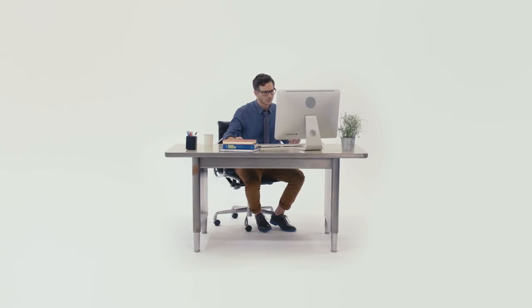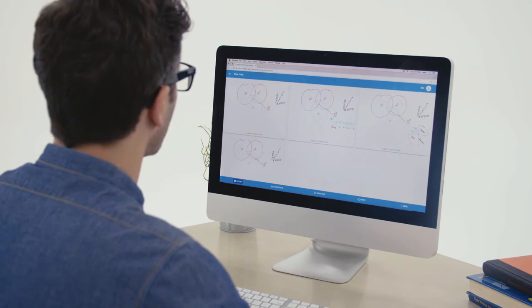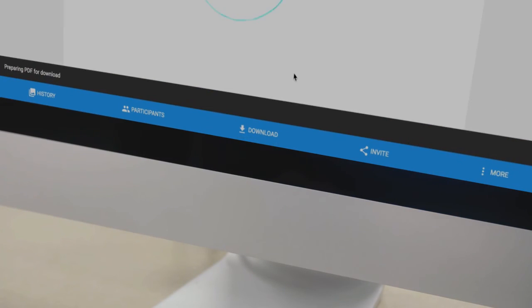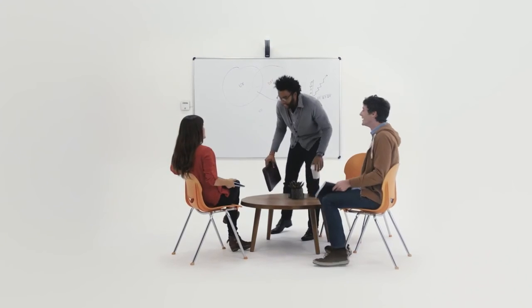You can also use the history feature to see how the whiteboard evolved during your meeting. And when you're done, you can download and share the whole meeting as a multi-page presentation. All with no need to replace the whiteboards you have. Clear, simple, and smart. Captivo.